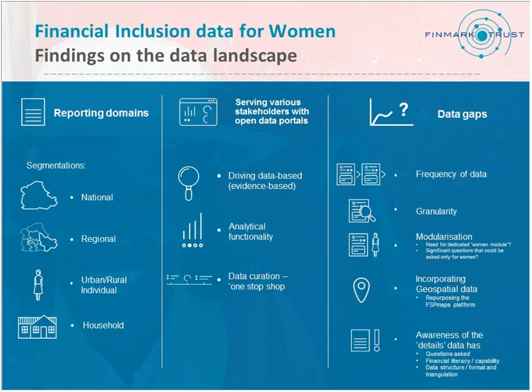FinScope is also similar to Findex and FII — it's nationally representative. There is a lot of demand from countries, especially ministries and ministries of gender inequality. They want data at the regional level because they would like to create programs that are targeted — rural versus urban, specific districts and regions. That's one of the reasons why FinScope data is so comprehensive. There is also a lot of data on the rural-urban split and at the household level, with household weights so that there is a difference in reporting.